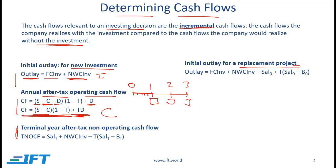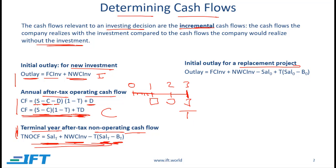The third item is the terminal year after-tax non-operating cash flow. This happens at the end of the project and equals the salvage value at time t — we might sell off equipment — plus the net working capital investment, since inventory and other working capital is liquidated, and then minus t times the capital gain. If we sell equipment at the salvage value at time t but there is a certain book value, the difference is our gain, and t times that gain gives us the tax on the capital gain. This is our cash flow at the end of the project.